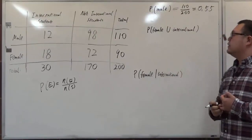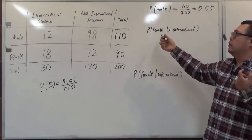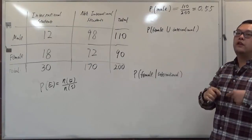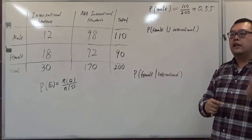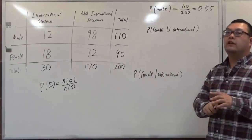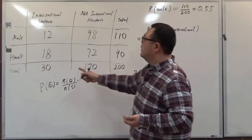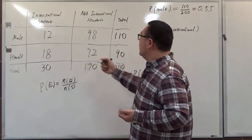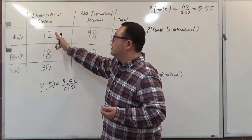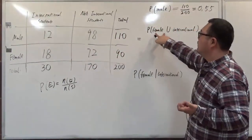For the second question, we're finding the probability using the union notation, meaning the person we select is a female or an international student. This 'or' is inclusive, so we could have the case where the person is both female and international. Intuitively, we're looking at the female row and also the international student column. Basically, we have three different categories that satisfy 'female or international student.'